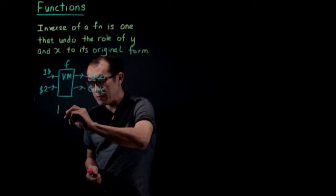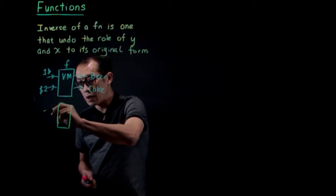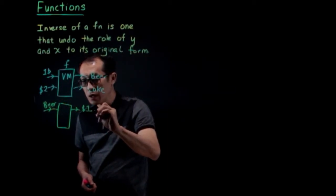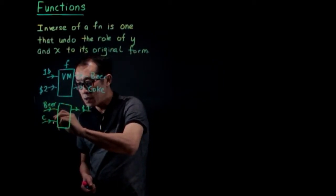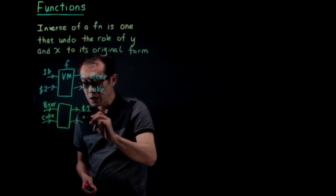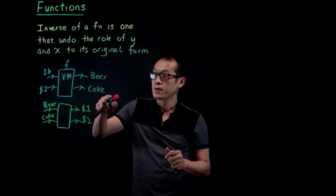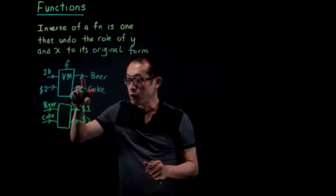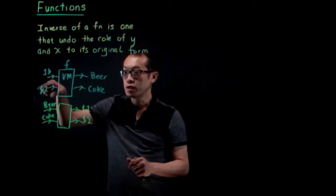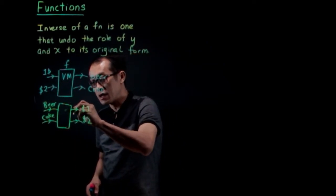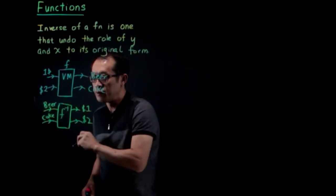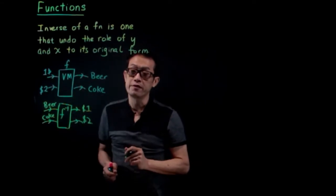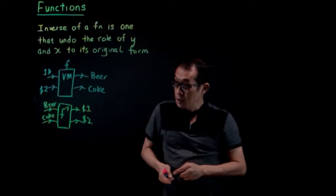What is the inverse function? The inverse function means: if you put a beer into the machine, you get one dollar back, and if you put a coke in, you get two dollars. So whatever you put into machine F comes out as output, and if you put that same output into another machine, it comes out as the input of F. That machine is called the inverse of F, written as F with a minus one sign.